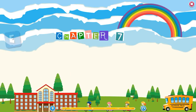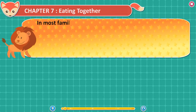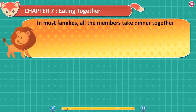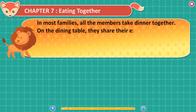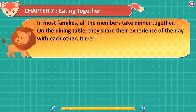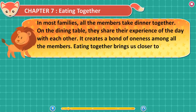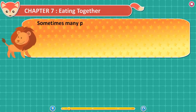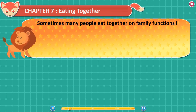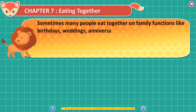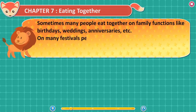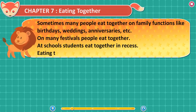Chapter 7: Eating Together. In most families, all the members take dinner together. On the dining table, they share their experiences of the day with each other. It creates a bond of oneness among all the members. Eating together brings us closer to each other. Sometimes, many people eat together on family functions like birthdays, weddings, and anniversaries. On many festivals, people eat together. At schools, students eat together during breaks. Eating together creates a sense of unity and togetherness.